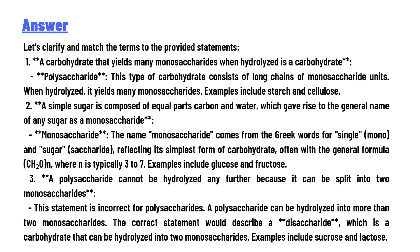Number two: a simple sugar composed of equal parts carbon and water, which gave rise to the general name of any sugar, is a monosaccharide. The name monosaccharide comes from the Greek words for single (mono) and sugar (saccharide), reflecting its simplest form of carbohydrate, often with the general formula CH₂O times n.